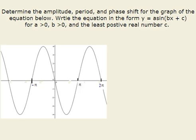In this problem we are asked to determine the amplitude, the period, and the phase shift for the graph of the equation below. We want to write the equation in the form y equals a sine of bx plus c for a greater than 0, b greater than 0, and the least positive real number c.